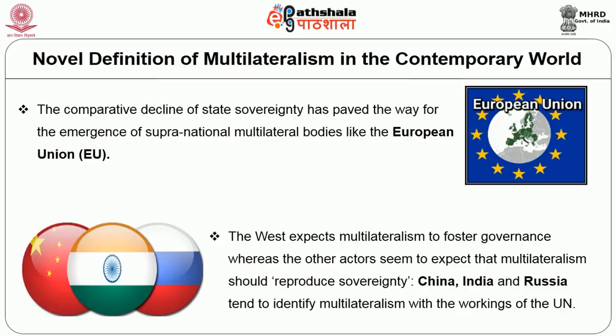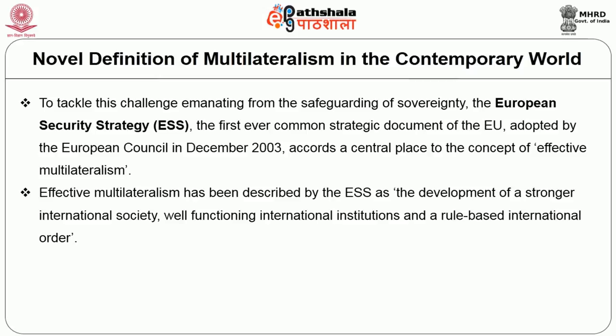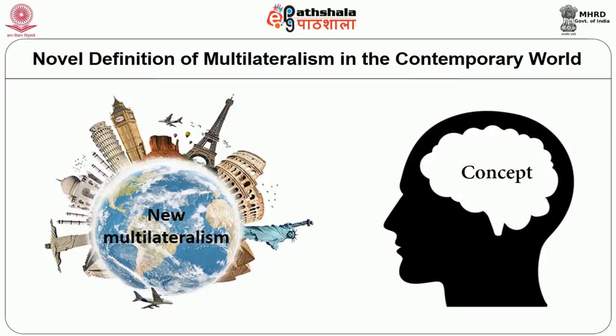Not surprisingly, China, India and Russia tend to identify multilateralism with the workings of the UN. To tackle the challenge of safeguarding sovereignty, the European Security Strategy — the first-ever common strategic document of the EU, adopted by the European Council in December 2003 — accords a central place to the concept of effective multilateralism. Effective multilateralism has been described by the ESS as the development of a stronger international society, well-functioning international institutions and a rule-based international order. It stresses that international organizations, regimes and treaties can become effective if the EU is ready to act when their rules are broken. Effective multilateralism thus appears to imply enforceable multilateralism.